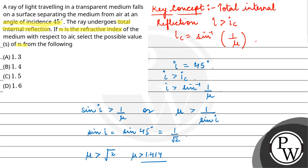So that means option B is not possible because it is 1.4. The value must be greater than 1.4.